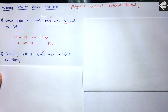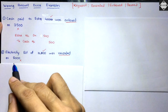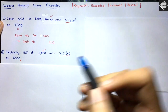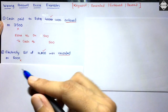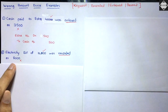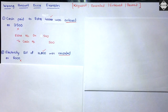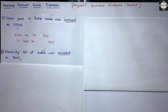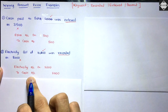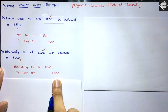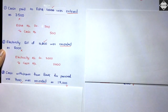Example 2: Electricity bill of ten thousand was recorded as eight thousand. The keyword is 'recorded,' entire transaction is wrongly recorded. Less amount has been recorded — the differential is ten thousand minus eight thousand equals two thousand. Pass the correct entry with differential amount: electricity account debit to cash account, two thousand. Electricity expense increases by two thousand and cash decreases by two thousand.